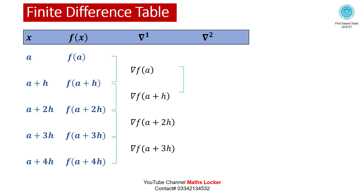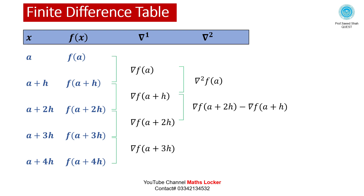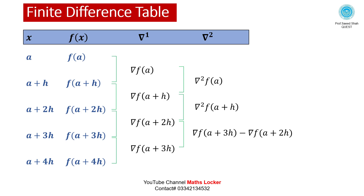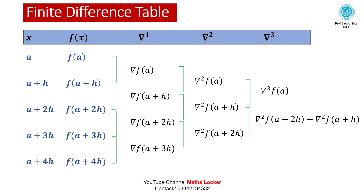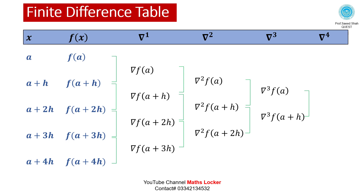Taking the second differences, then the third differences: del²f(a+h) minus del²f(a), say del³f(a). And del²f(a+2h) minus del²f(a+h), say del³f(a+h). Taking the fourth difference: del³f(a+h) minus del³f(a), say del⁴f(a).